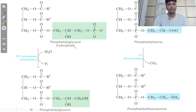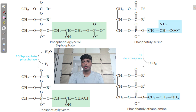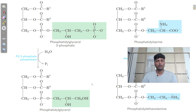Once phosphatidylglycerol-3-phosphate is formed, removal of the phosphate group gives phosphatidylglycerol. From phosphatidylserine, removal of one CO₂ (carbon dioxide) yields phosphatidylethanolamine. There are thus different ways by which the cell can form different types of phospholipids, all of which are required for different types of cell signaling.